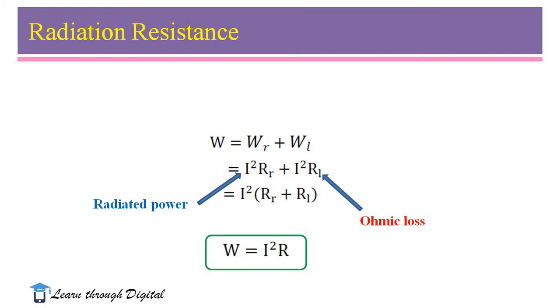Therefore, the total power W = I²(RR + RL). It is nothing but W = I²R, where R is the sum of radiation resistance and loss resistance.